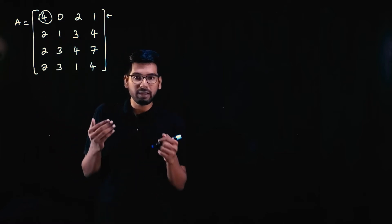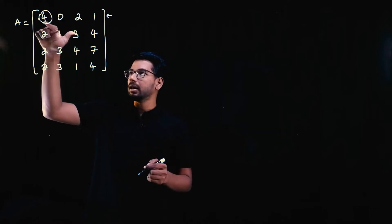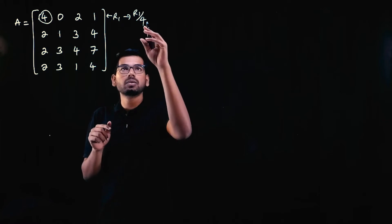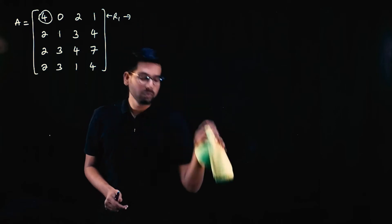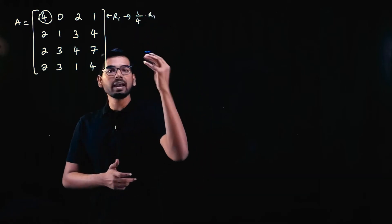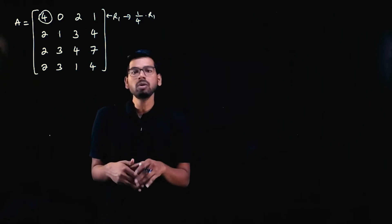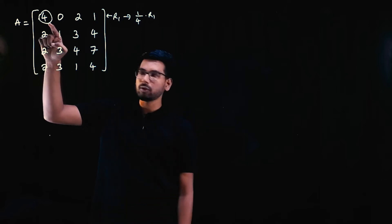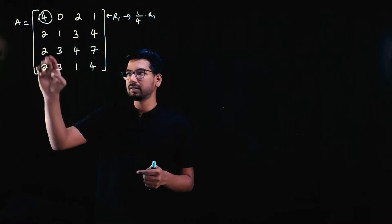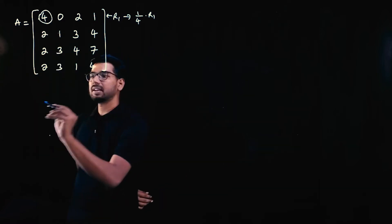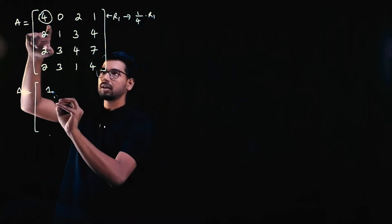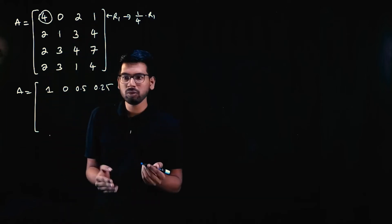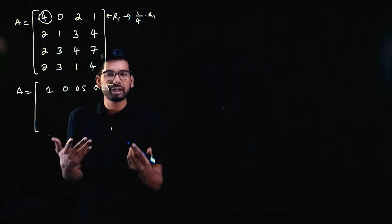The first element is not 1, it's 2. So divide row 1 by 4 — that is, multiply 1/4 into row 1, a scaling operation. So each element is divided by 4: 4 by 4 is 1, 0 by 4 is 0, 2 by 4 is 0.5, 1 by 4 is 0.25. Matrix elements can be decimal or fraction or anything basically.